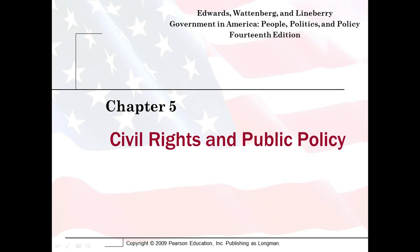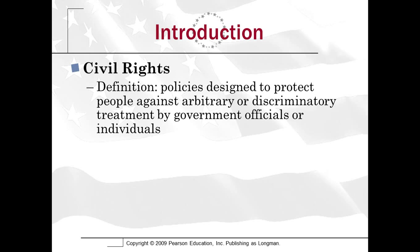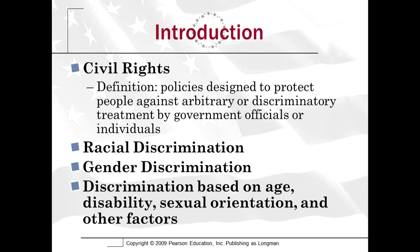Civil rights and public policy. If civil liberties are protections individuals have against the government, civil rights are protections groups of people have against both the government and individuals. They protect you from arbitrary or discriminatory treatment based on your membership in a particular group. There can be racial discrimination, gender discrimination, or discrimination based on all kinds of other things — age, disability, sexual orientation, or all kinds of other factors.